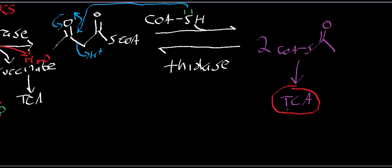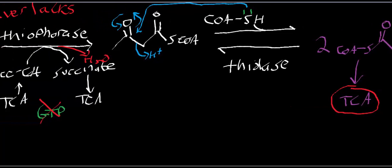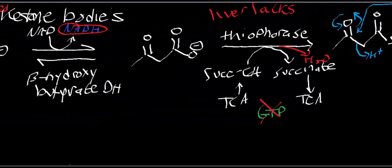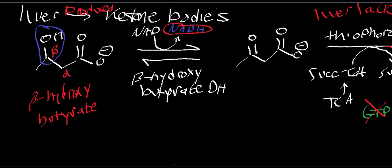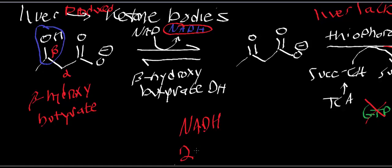If you're not actively catabolizing glucose, you're most likely going to be producing a lot of ketone bodies, and of course that's characteristic of diabetes mellitus. Ultimately, we do get fuel out of this — we get an NADH and 2 acetyl-CoA's.